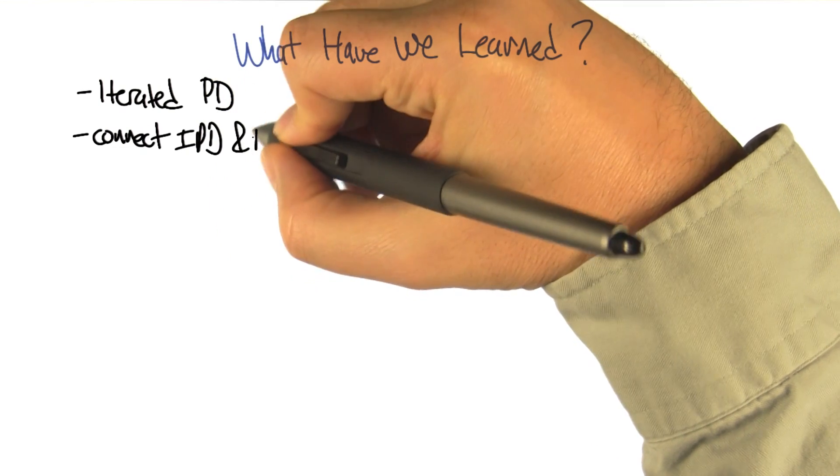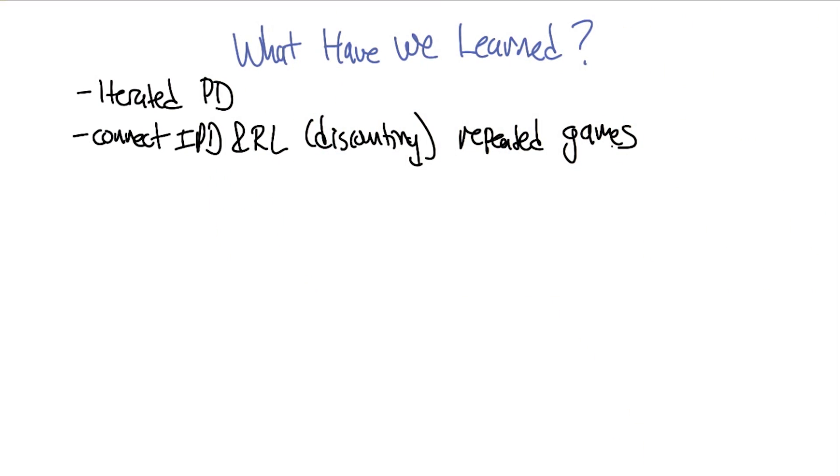What do you mean? Through the discount. Yeah, so I think of that as being the idea of repeated games. Right. Let's see, what else have we learned? So we learned about iterated prisoner's dilemma, which allowed us to get past this really scary thing with repeated games, connected it with reinforcement learning, with discounting.